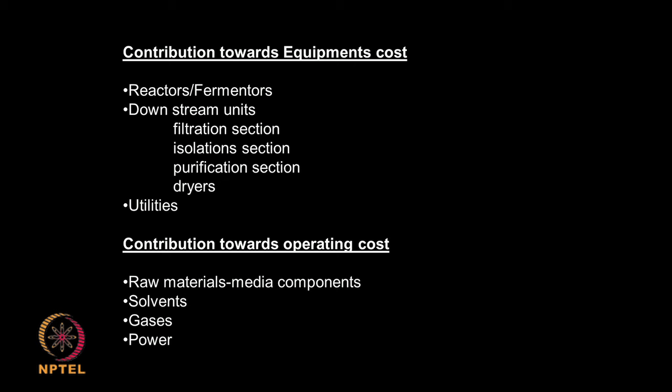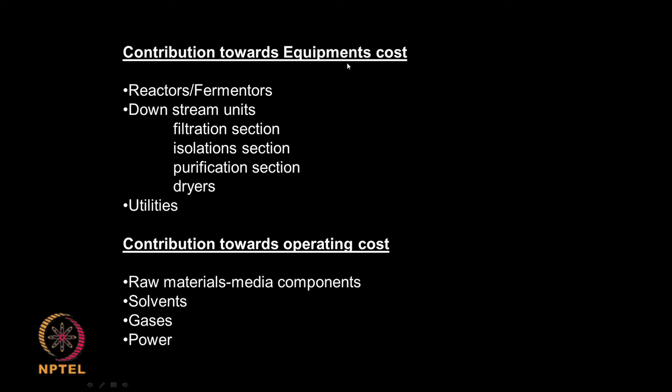What are the things that contribute towards the operating cost? Operating means running — raw material cost, various raw materials which you will use in your media preparation, solvents you may be using in extraction and other separation processes, gases and then power — the electricity which you will use. All these contribute towards the operating cost. So you have equipment cost related to the equipment and then cost related to the operating as well.